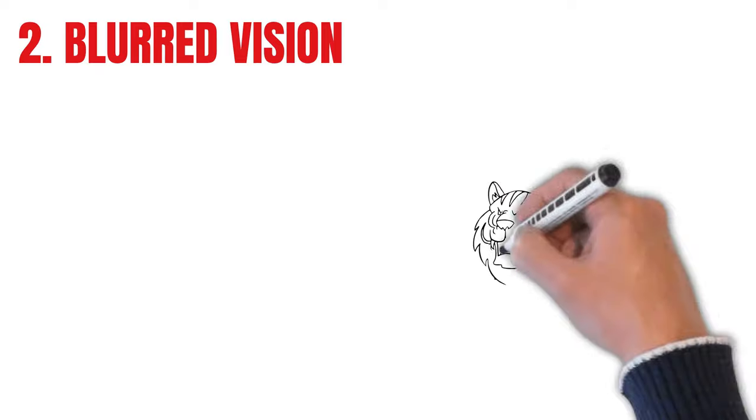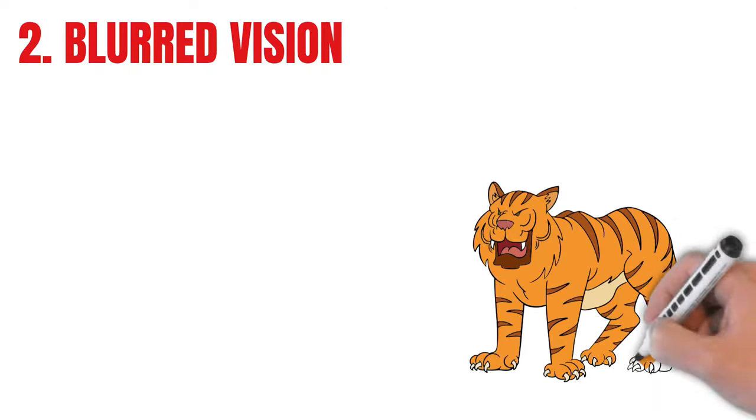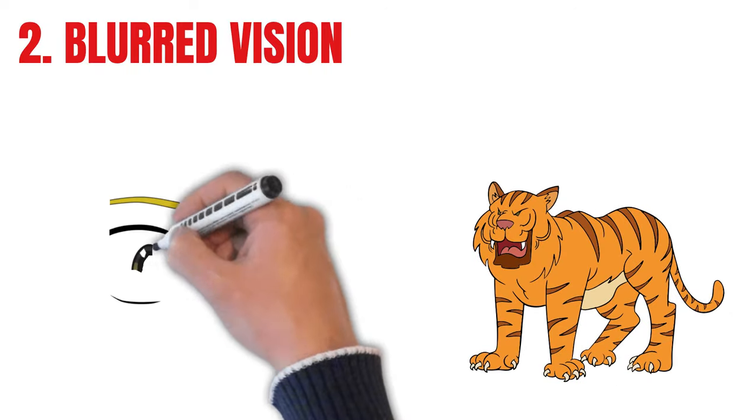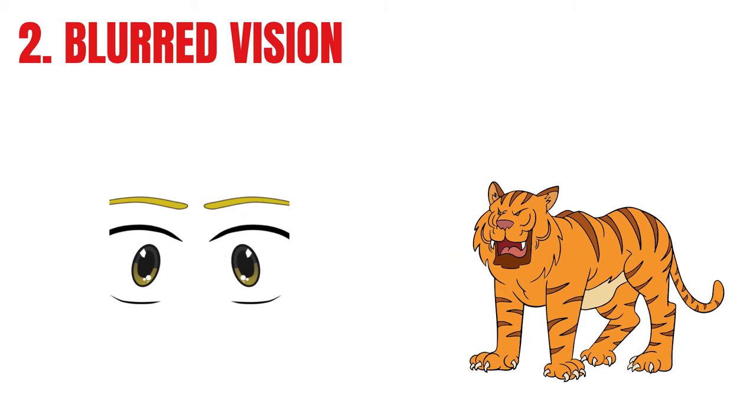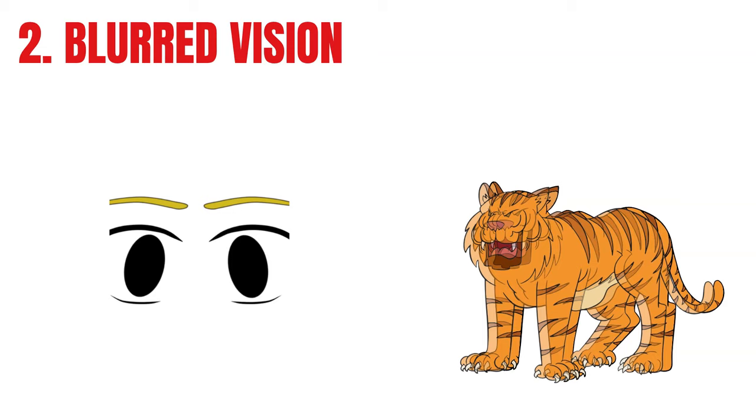Number two, blurred vision. When the body thinks it's in danger it releases a lot of adrenaline. This causes the pupils to dilate to see the danger better, but paradoxically it can actually cause blurred vision.